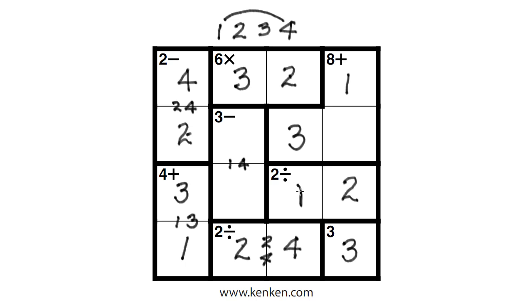And by process of elimination, that has to be one, which means that this one has to be four. That one has to be one. And the only remaining possibility is this must be four. And you can take another quick look over here and make sure that everything is correct. And indeed it is. So we've now solved our first 4x4 KenKen. Congratulations.